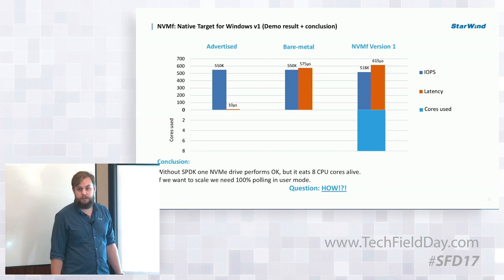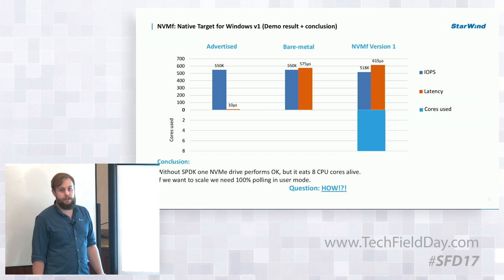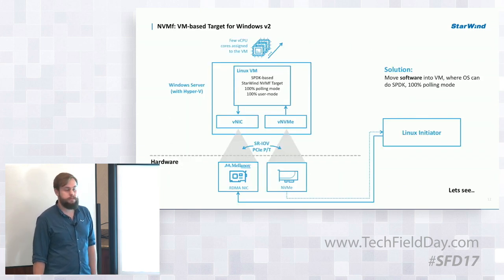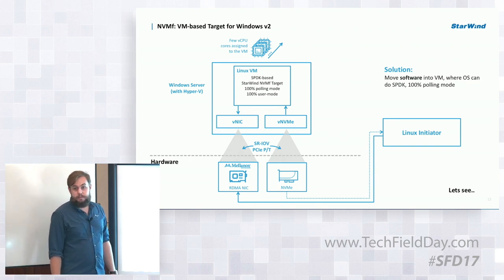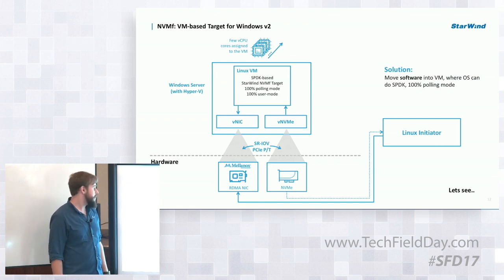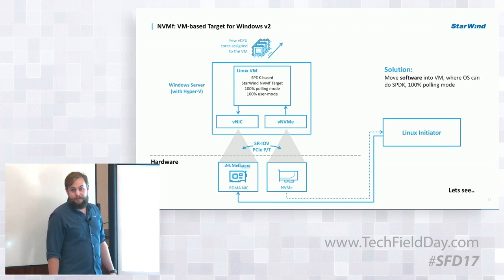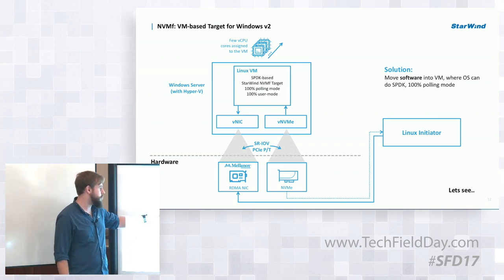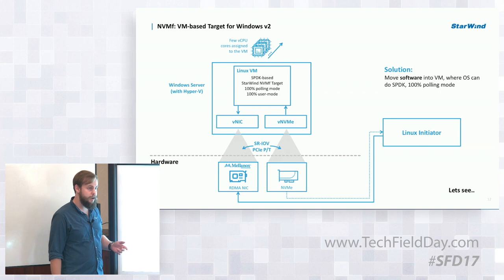The only thing we could do was get rid of all that kernel processing — but the question is how to do that with no SPDK on Windows. The trick is to get SPDK into Windows using an alternative route: we took a Linux virtual machine where we have SPDK, mapped the NVMe and the networking directly to the VM using SR-IOV or passthrough, put our target on Linux. We now have a Linux version with 100% polling mode and 100% user-mode processing, and we only needed to assign four CPU cores to this virtual machine.